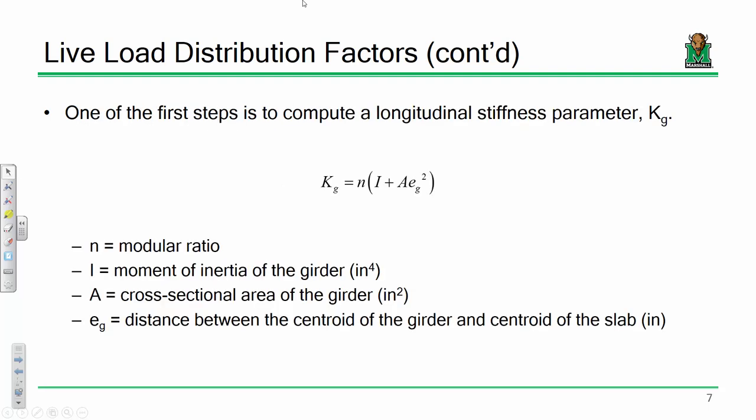The first step to determine live load distribution factors is to compute what's called a longitudinal stiffness parameter, KG. A longitudinal stiffness parameter is a generalized expression of how stiff a given girder is. By including the modular ratio, whether you're dealing with a steel bridge or a concrete bridge, this is the code's way of normalizing a superstructure type. Your modular ratio for a steel beam with concrete deck is going to be very different than for a concrete deck with a concrete beam.